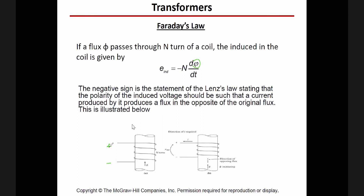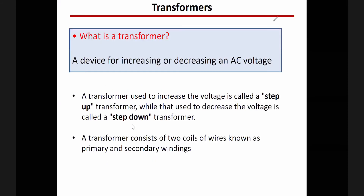This is the main concept of the transformer: it works only with AC, not DC. With DC you cannot induce a voltage; with AC you can. So by definition, a transformer is a device for increasing or decreasing an AC voltage — we specifically say AC because with DC, the derivative is zero and there will be no voltage induced in the secondary. There are two types: step-up, where the output voltage is higher than the input voltage, and step-down, where the output voltage is lower than the input voltage.